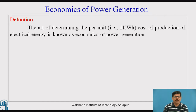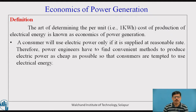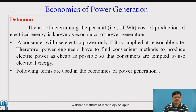Let us see the definition of economics of power generation. The art or science of determining the per unit cost — per unit means the electrical energy is measured with the unit 1 kilowatt hour, where 1 kilowatt hour equals 1 unit — so the art of determining the per unit cost of production of electrical energy is known as economics of power generation. A consumer will use electric power only if it is supplied at a reasonable rate. Therefore, power engineers have to find convenient methods to produce electric power as cheaply as possible so that consumers are tempted to use electrical energy.